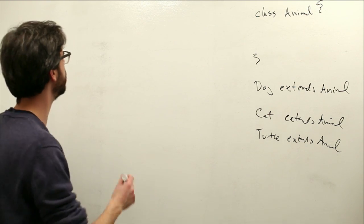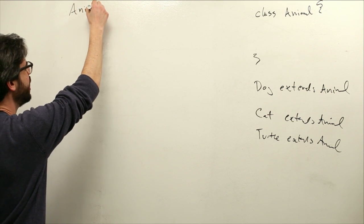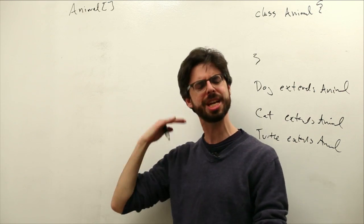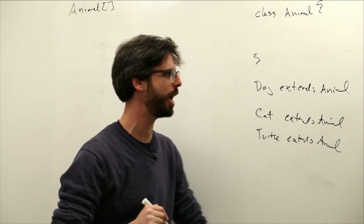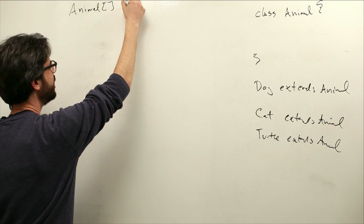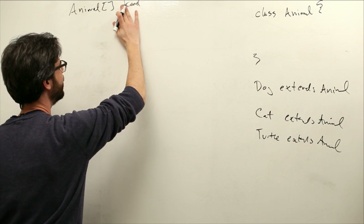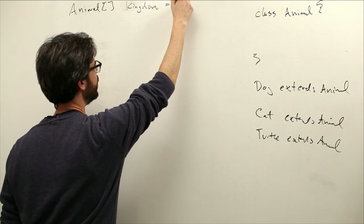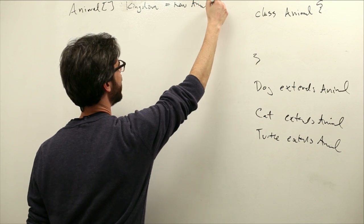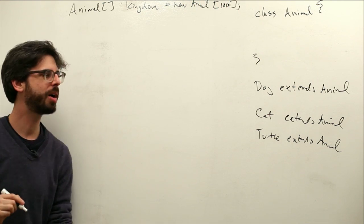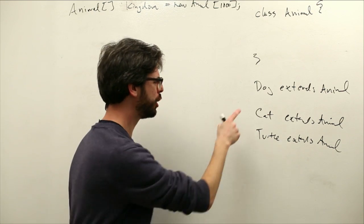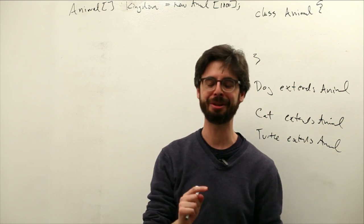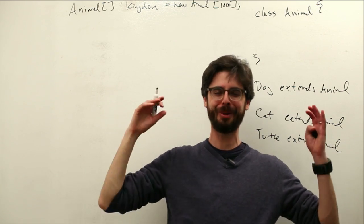Now what we want to do is make an array. In our particle system example we're going to use array lists, but just for thinking it through right now, let's use a plain old array. We're going to make an animal array called kingdom, which is a new animal array, and we're going to have a thousand animals in it. I want to put dogs and cats and turtles into that array. Can I do that? The answer of course is yes.